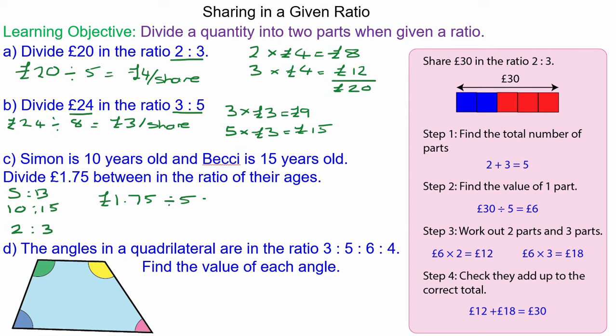Simon has got two of these which will be two times 35 pence, 70 pence. And Becky has three of them shares which comes to the difference between £1.75 and 70 pence, so Becky gets £1.05.